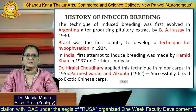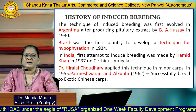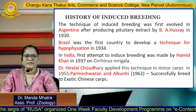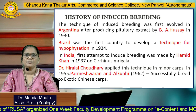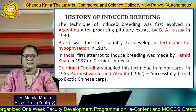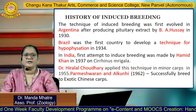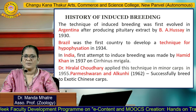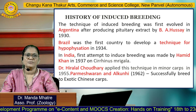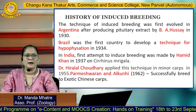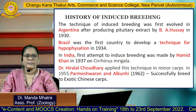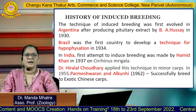Regarding the history of induced breeding, this technique was first evolved in Argentina after producing pituitary extract in 1930. Brazil was the first country to develop a technique for hypophysation in 1934. In India, the first attempt to induce breeding was made by Hamid Khan in 1937 on Cirrhinus reba.